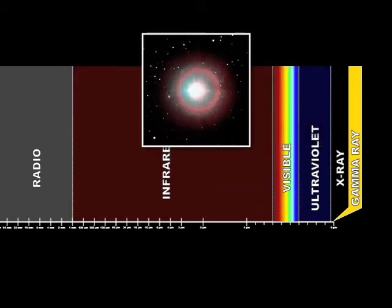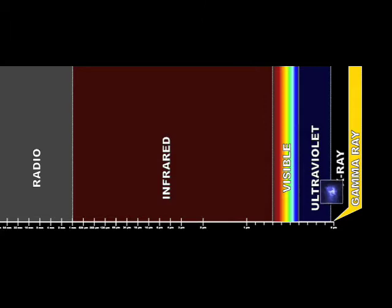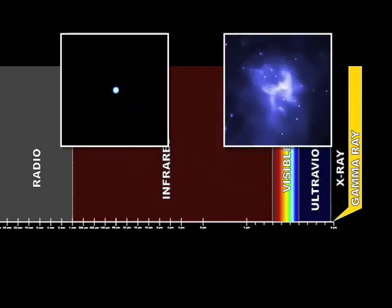Hotter objects glow in visible light. And some objects, like the inner disks around black holes or gamma ray bursters, are so hot that they actually shine in X-ray or gamma ray light.